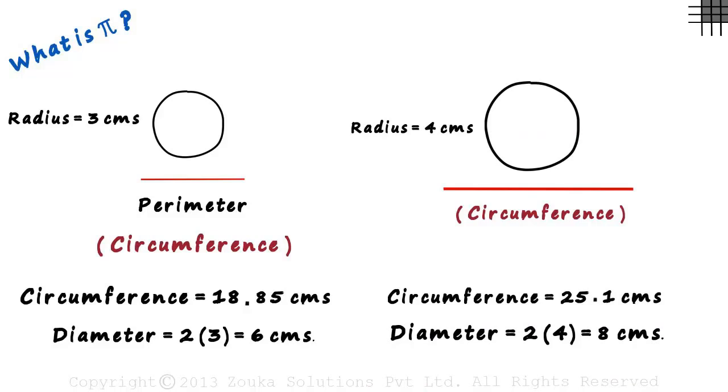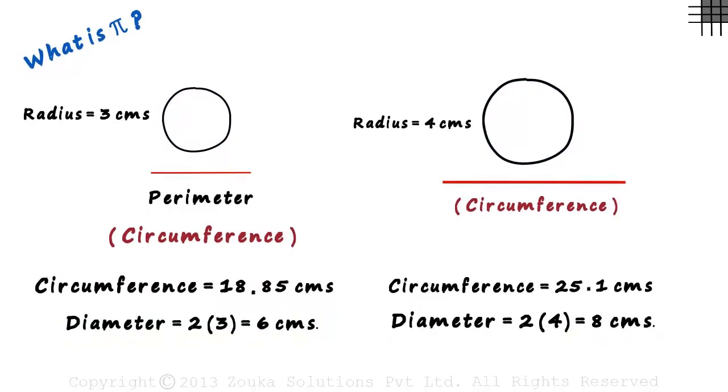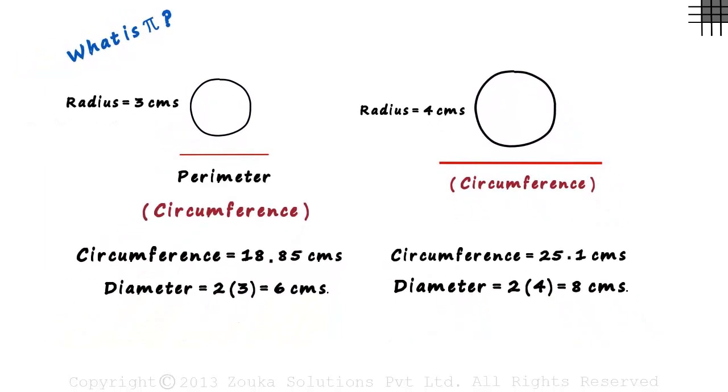So we have the circumference and the diameter values for each of the circles. Now here's the best part. If we calculate the value of circumference by the diameter in the first case, we will come up with approximately 3.14.